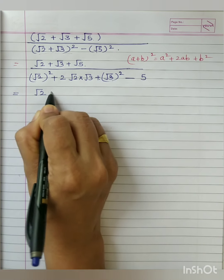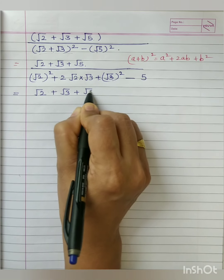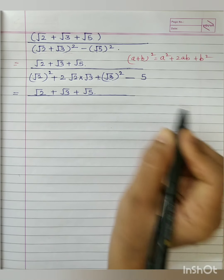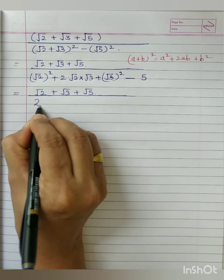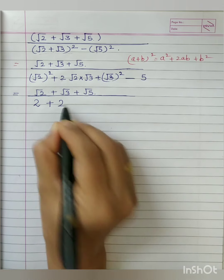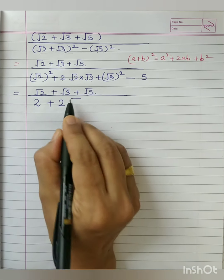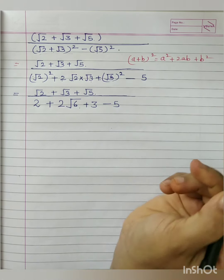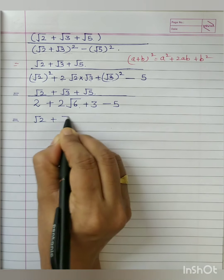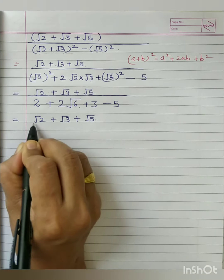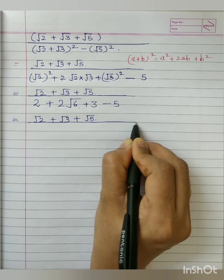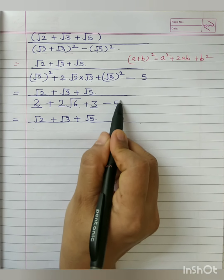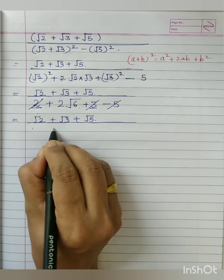Keeping the numerator as it is: root 2 plus root 3 plus root 5. Remember, root a plus root b is not root (a plus b). Root 2 squared gives 2; root 2 into root 3, being same order, becomes root 6; root 3 squared is 3; and minus 5. So the denominator is 2 plus 2 root 6 plus 3 minus 5. The rational terms: 2 plus 3 is 5, and 5 minus 5 equals 0 — those terms cancel. Our denominator left is 2 root 6.